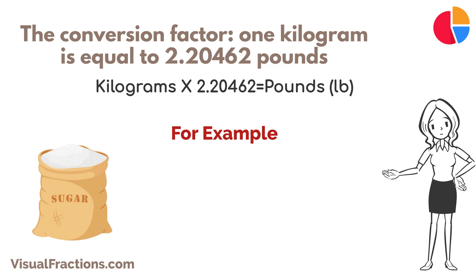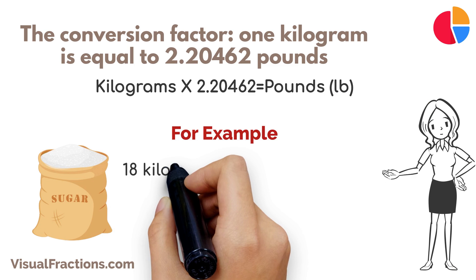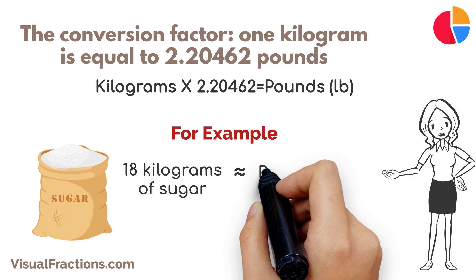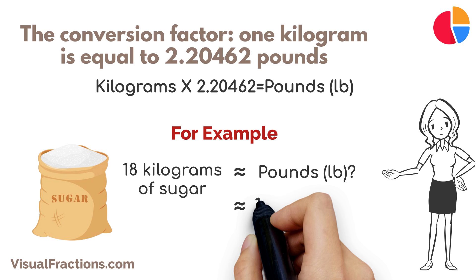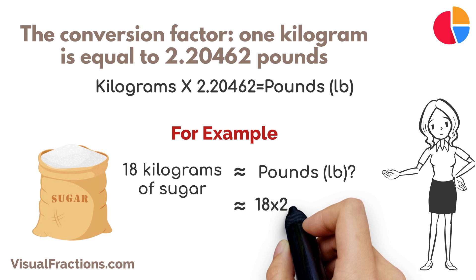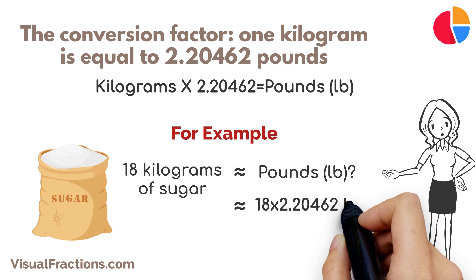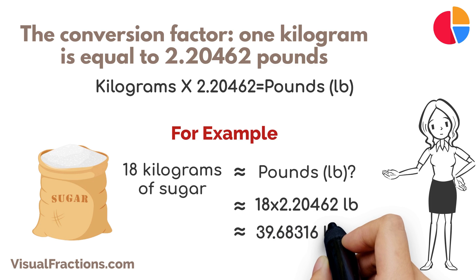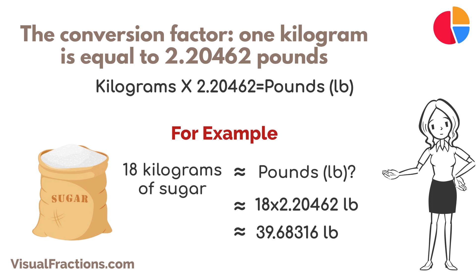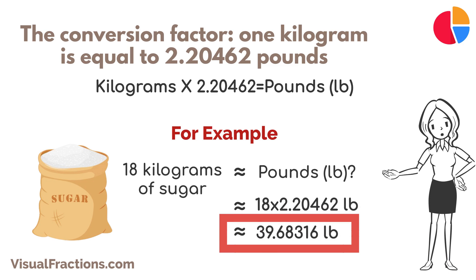Let's walk through an example. Say you have 18 kilograms of sugar that you need to convert to pounds. We start by multiplying 18 by the conversion factor of 2.20462. This gives us approximately 39.68316 pounds. And that's it — we're done. 18 kilograms of sugar is equal to approximately 39.68316 pounds.